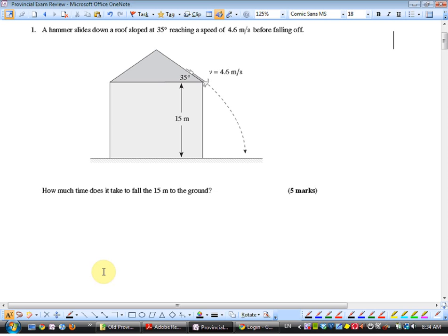Here is the first question. A hammer slides down a roof sloped at 35 degrees, reaching a speed of 4.6 meters per second before falling off. How much time does it take to fall the 15 meters to the ground? This is a projectile-ish question. What we still said you want to do is you absolutely want to go components.